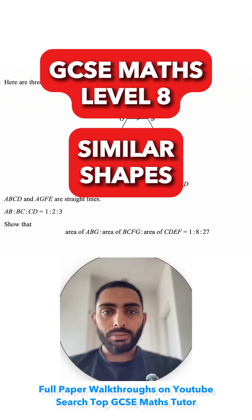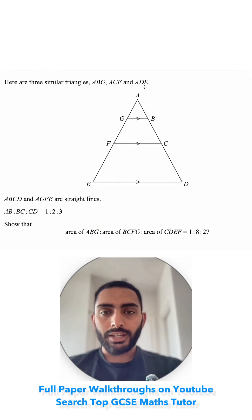Question 23. Here are three similar triangles, ABG, ACF and ADE. Similar just means that they're enlargements of each other. The angles will be the same, but the lengths will be multiplied by a scale factor.